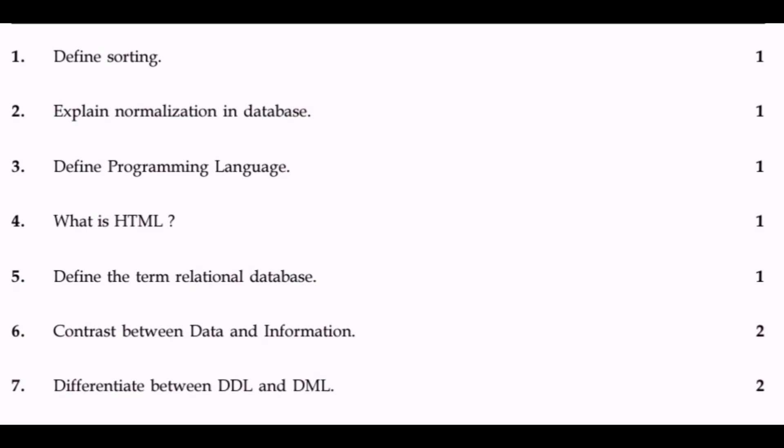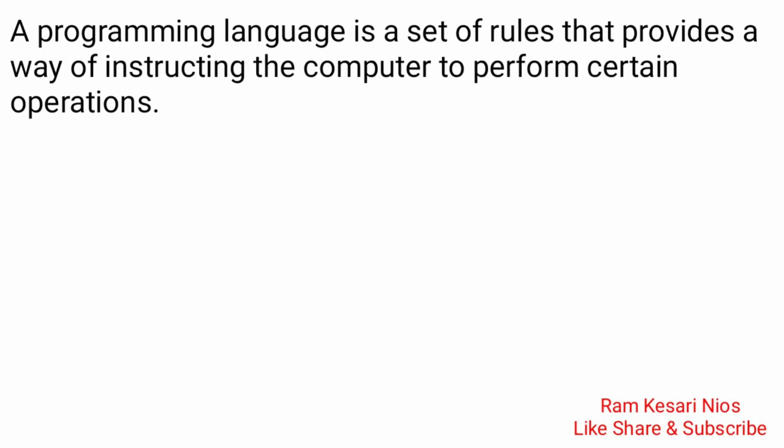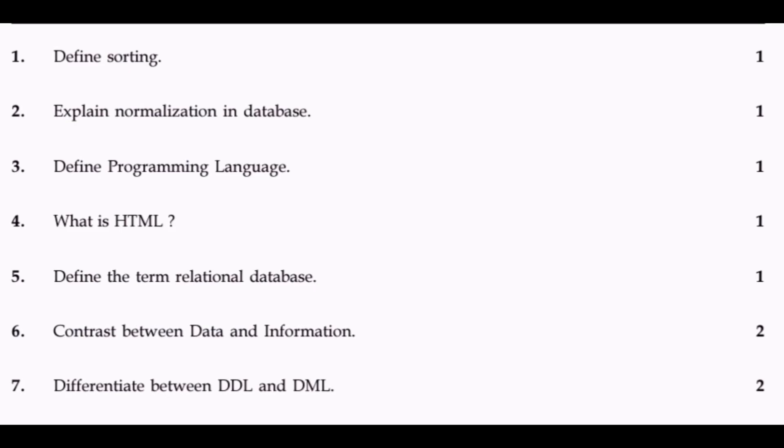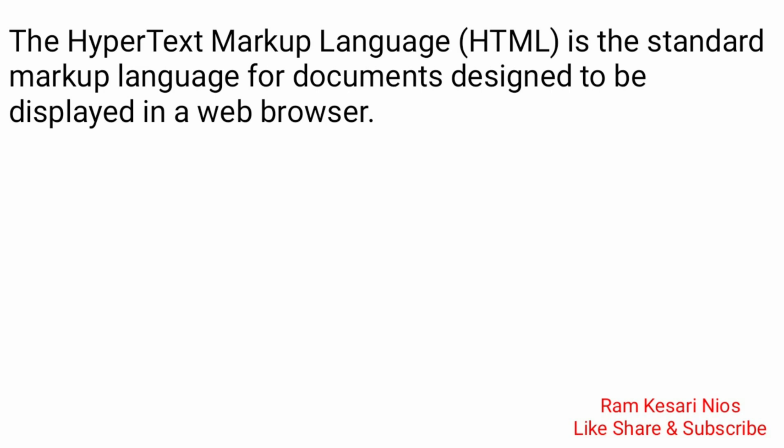Question 3: Define programming language. A programming language is a set of rules that provides a way of instructing the computer to perform certain operations. Question 4: What is HTML? The HyperText Markup Language is the standard markup language for documents designed to be displayed in a web browser.